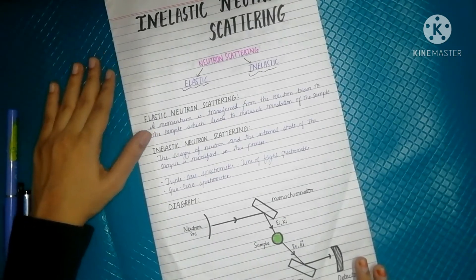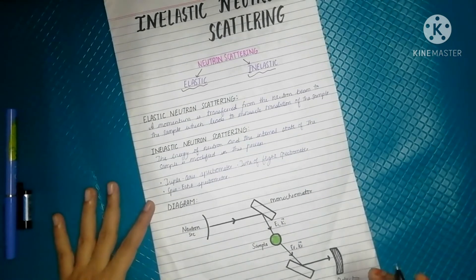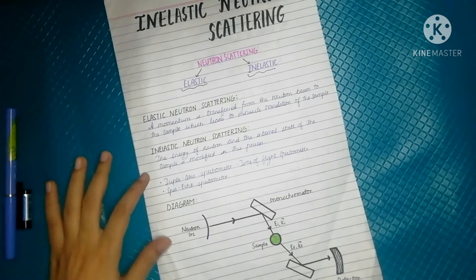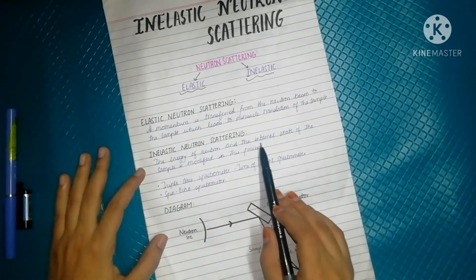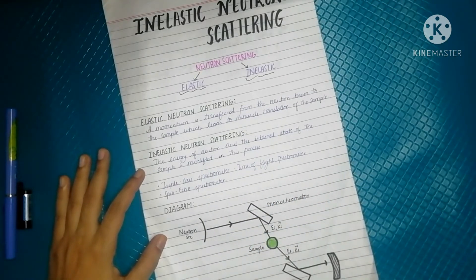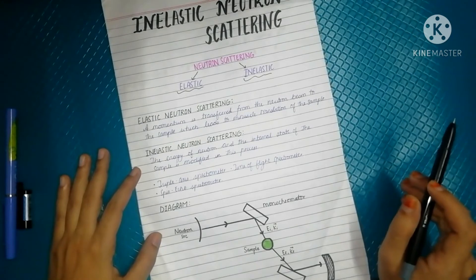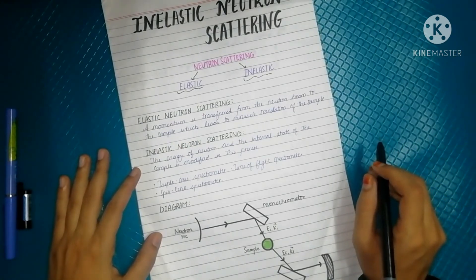Also, the energy of the neutron beam changes in this process. The energy of neutron and the internal state of the sample is modified in this process. So the observer has to keep track not only of the flight direction of the scattered neutron, but also of its energy.